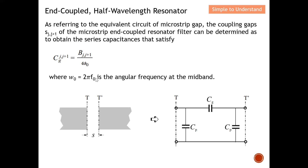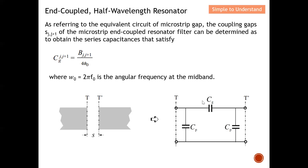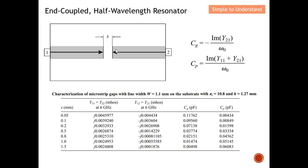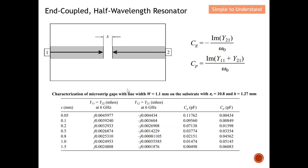For this example, f-naught will be at 6 GHz. Omega-naught here is the angular frequency at mid-band of the bandpass filter. While I can easily find the series capacitor, I may have some difficulty finding the parallel or shunt capacitor, and therefore I need to run some simulation to help find the shunt capacitor.